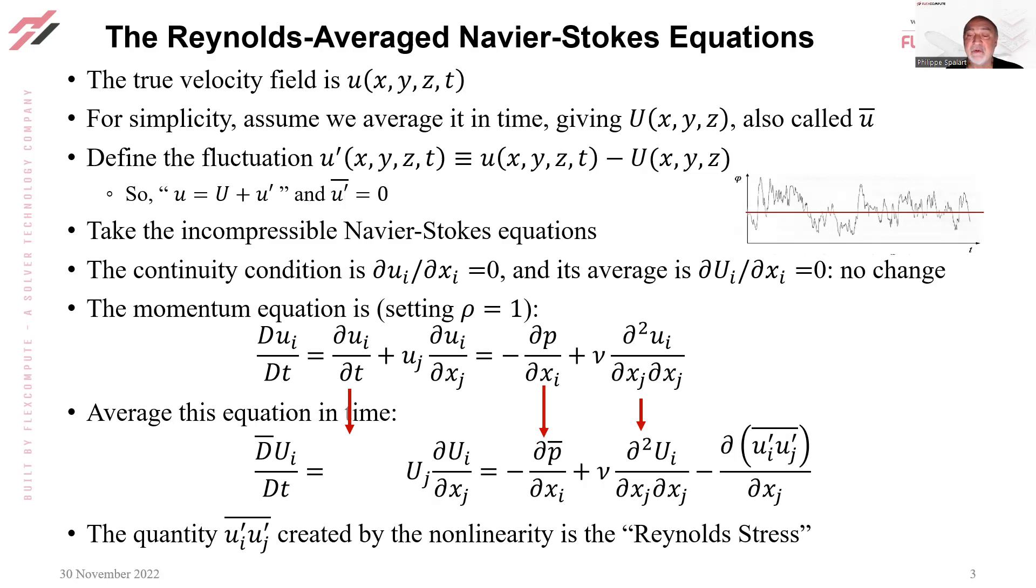Where things get interesting is that this nonlinear convection term gives you first a term that looks like the old one but with capital letters, and then what we put on the right-hand side, a term that contains the products of the fluctuations and then averaged over time. This quantity created by the nonlinearity is called the Reynolds stress.